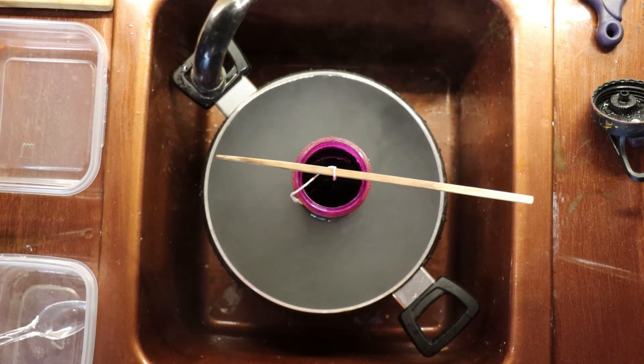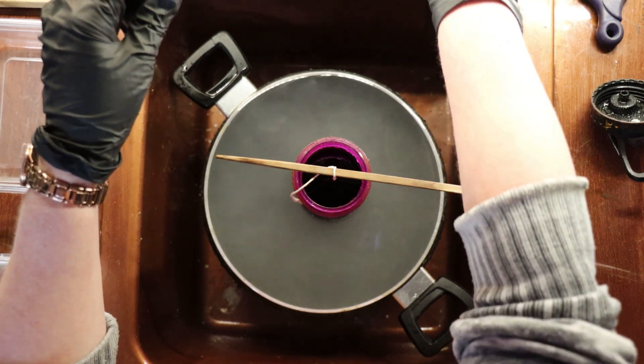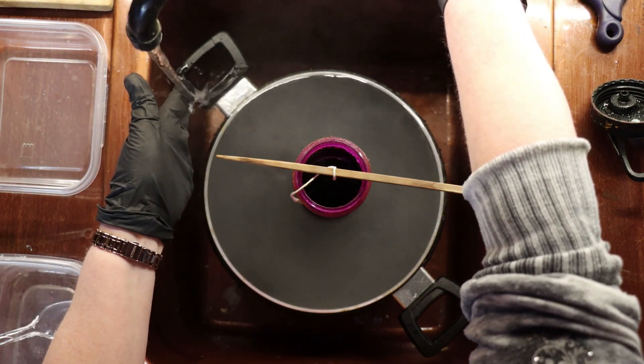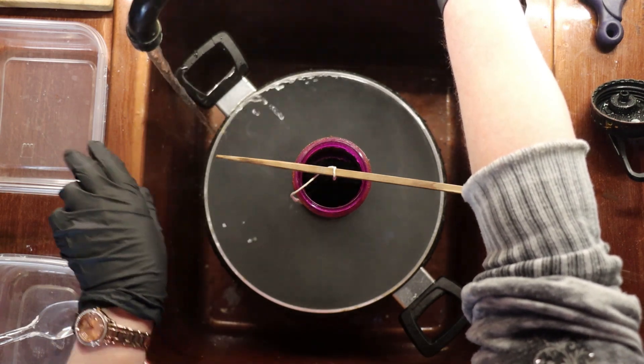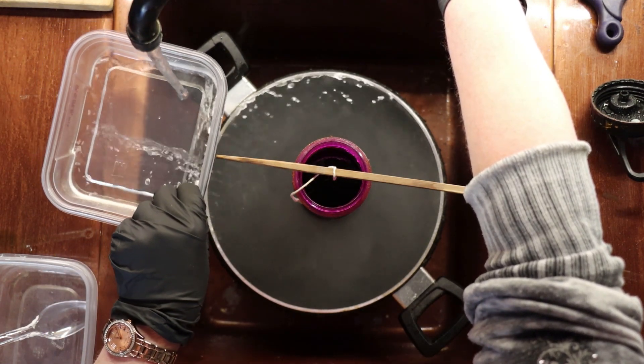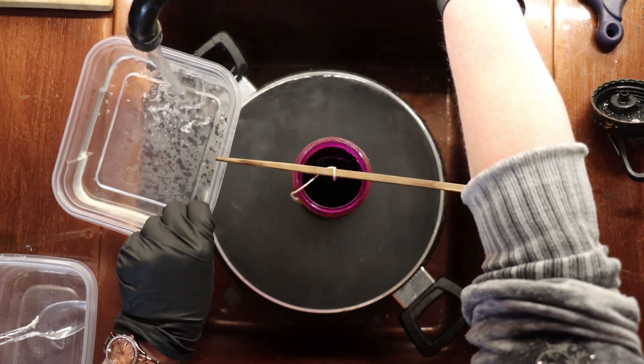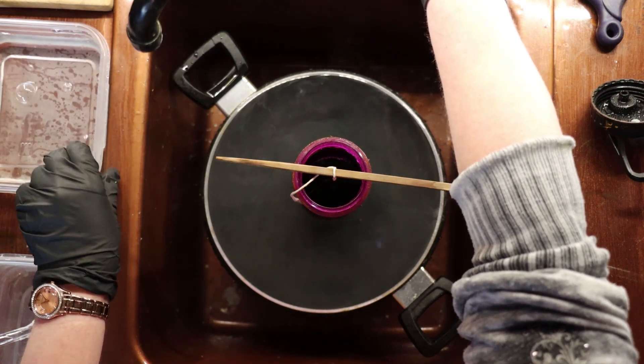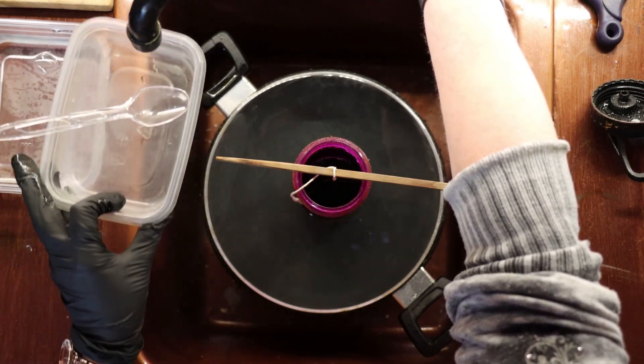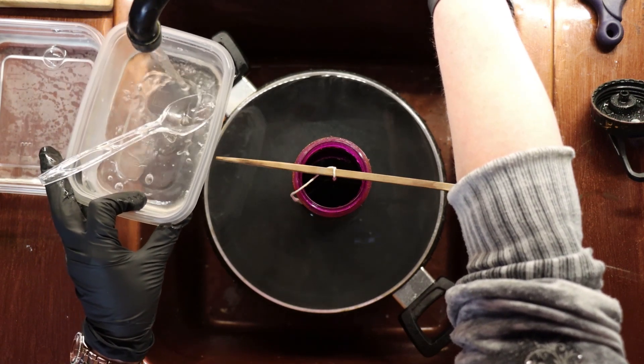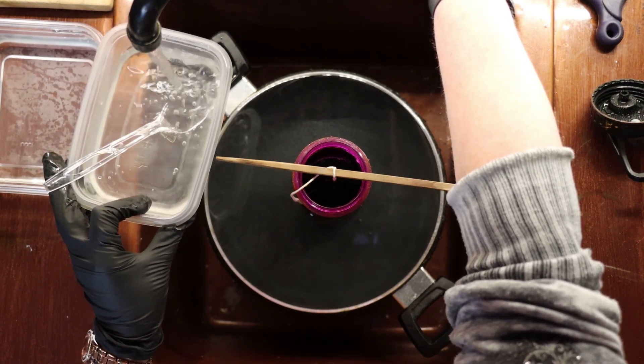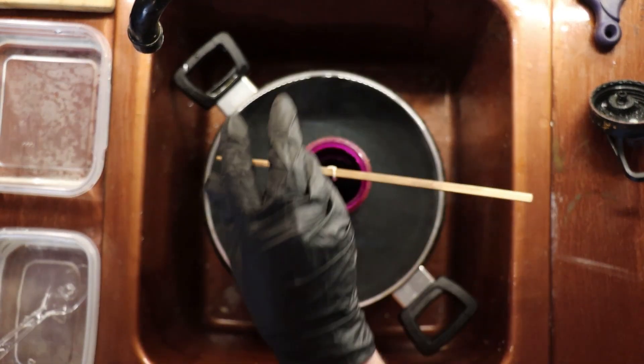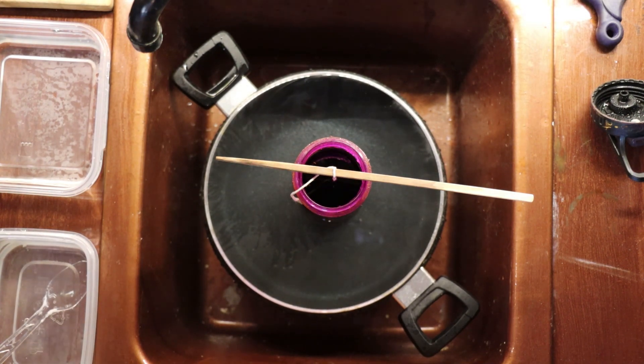While we're waiting on that, I'm going to go ahead and get a couple of containers of water ready so that we can rinse the piece. The first container just has water in it, and the second container will add water and some baking soda. The baking soda will allow us to neutralize the ferric nitrate.